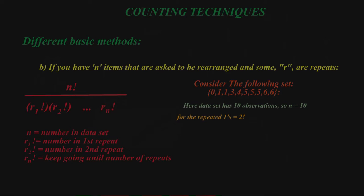And then the number of repeats for one is that there's two ones, so you would have a two factorial for one. There's three fives, so we would have a three factorial for fives. And then there's two sixes, so then we would have a two factorial for six.